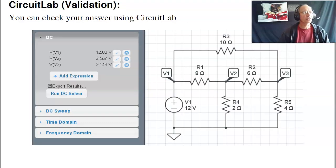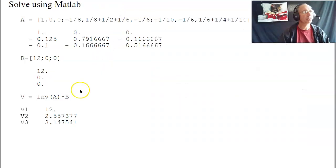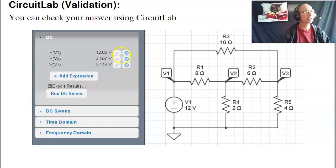To check your answer, that's where you use CircuitLab. If I build the circuit in CircuitLab, and then tell it to calculate the voltages V1, V2, V3, I get exactly the same answer. 12, 2.55, 3.148. As a reminder, there's 12, 2.55, 3.1475. Same answer.